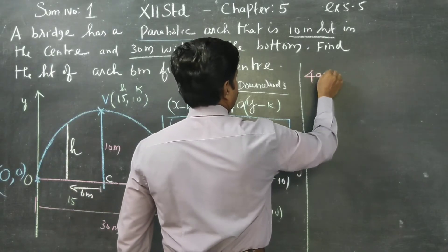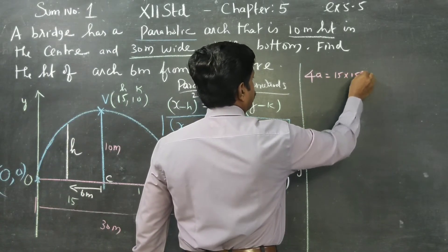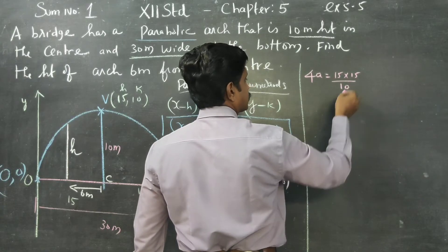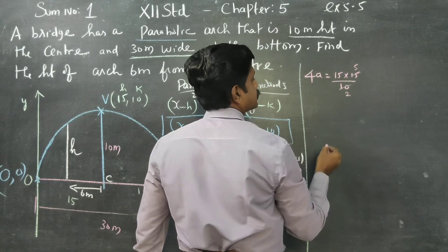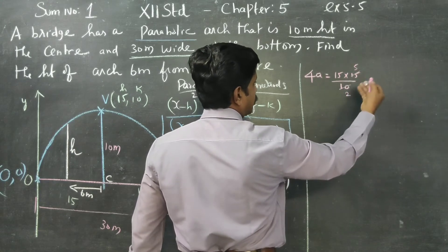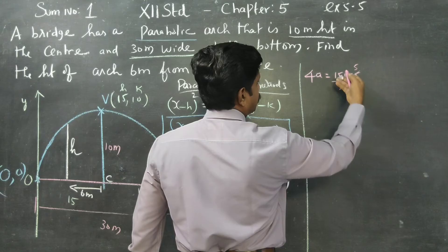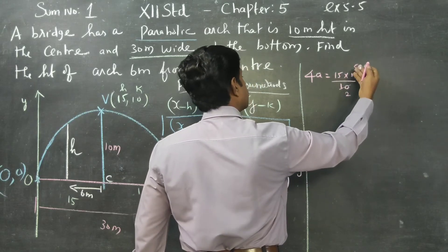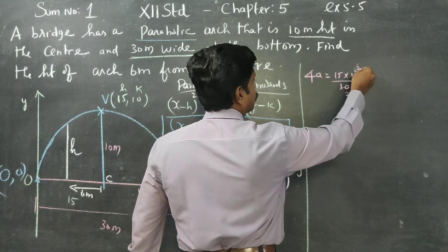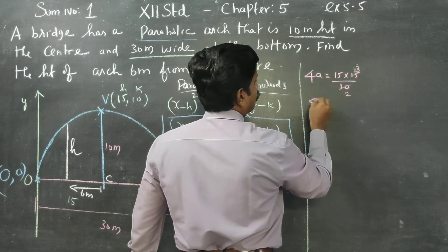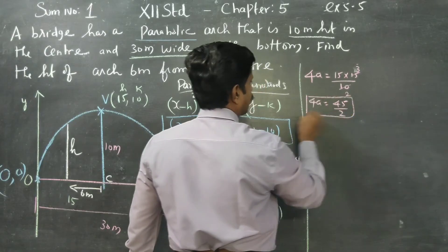Therefore, 15 times 15 equals minus times minus, giving plus 4A times 10. So 4A equals 15 times 15 divided by 10. Cancelling: 5 times 3 is 15, and 5 times 2 is 10. Therefore 4A equals 45 by 2.